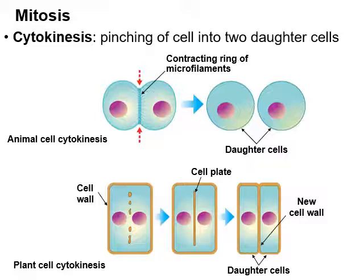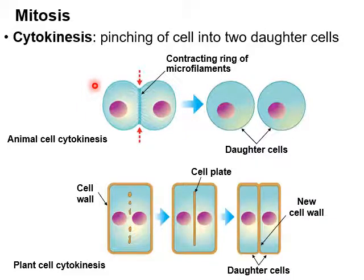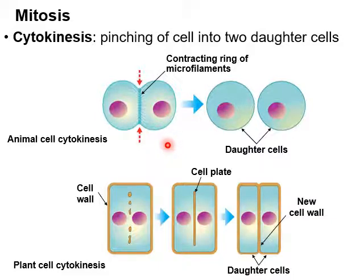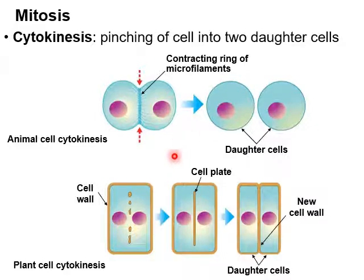Cytokinesis occurs differently between animals and plants because plant cells are rigid due to cell walls, whereas animal cells just have a plasma membrane. In animal cells, fibers around the cell contract and pull inward — imagine tying a string around a balloon and tightening it, so it starts to look like two balloons. Those fibers condense all the way down and then pop, giving you two new daughter cells separated from each other. In plant cells you can't just pinch them because they're rigid.